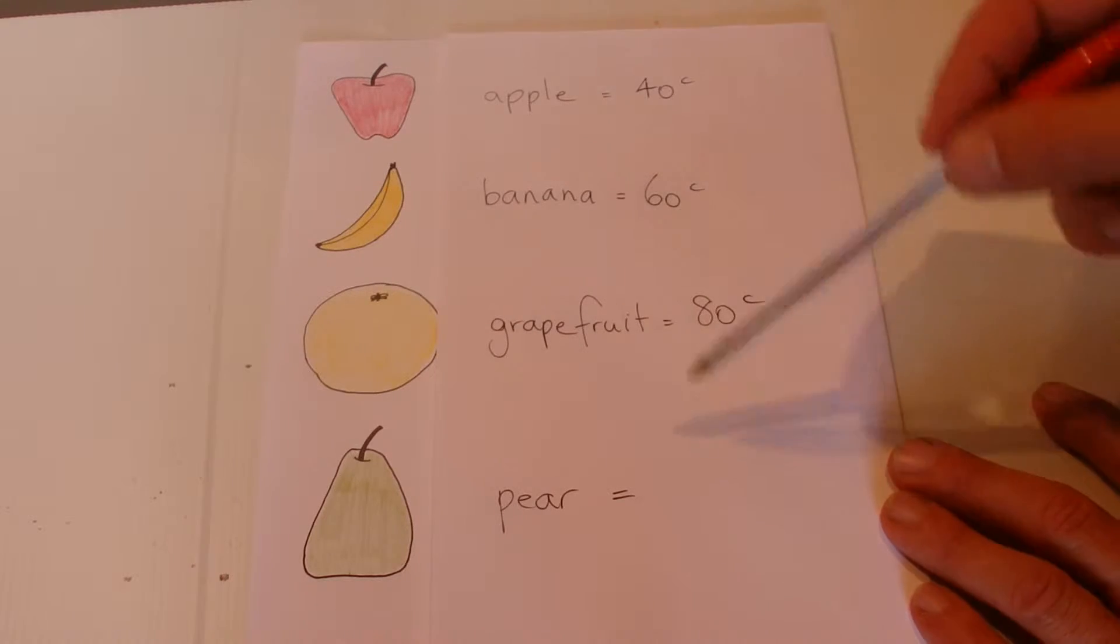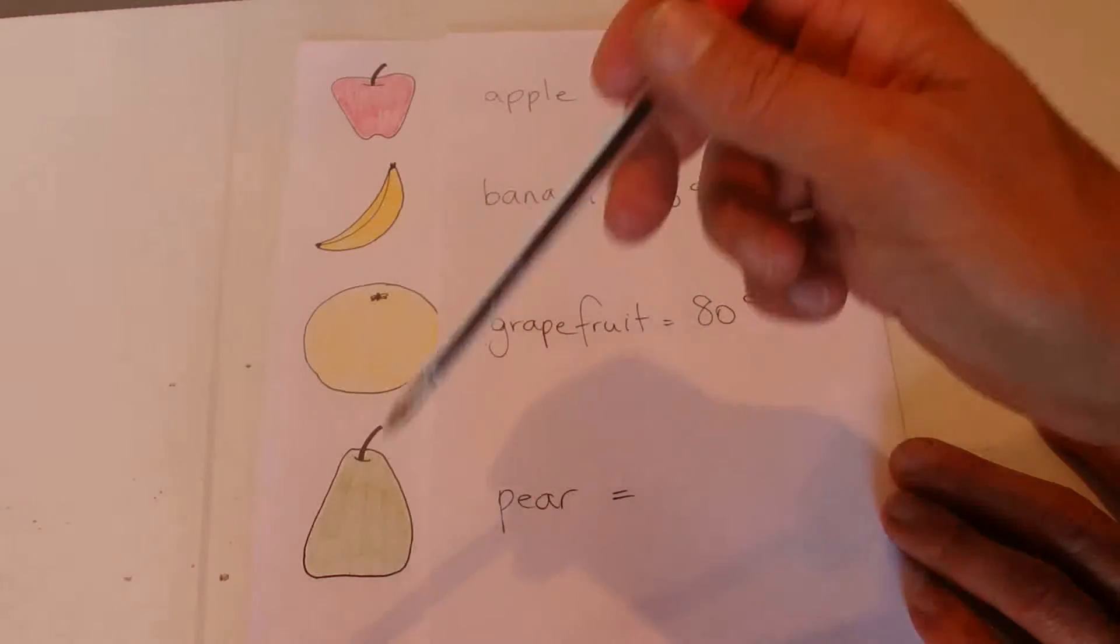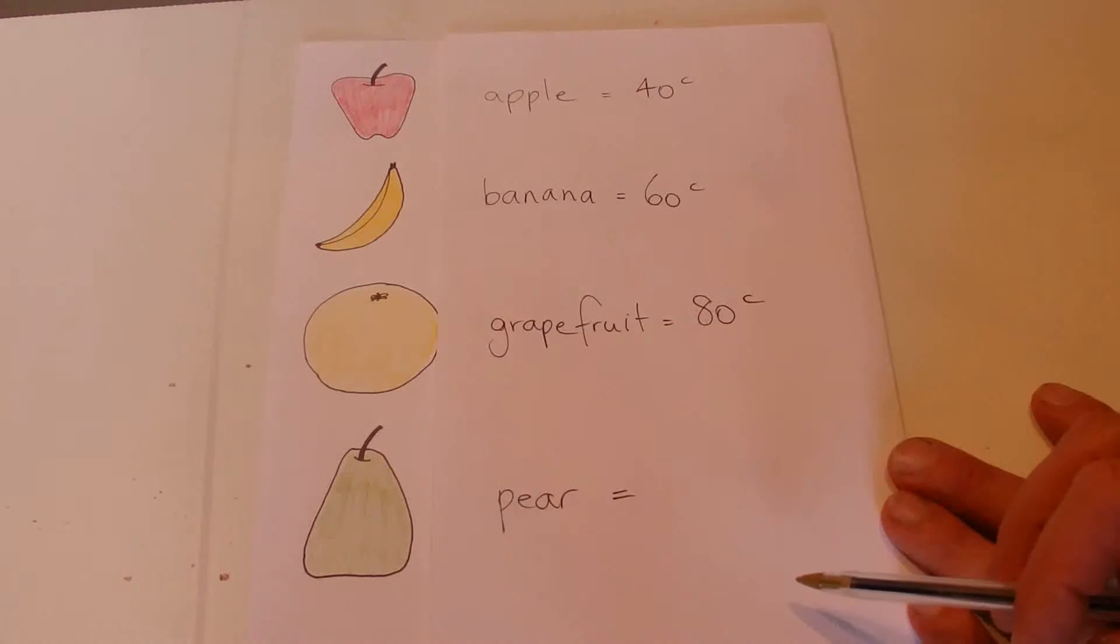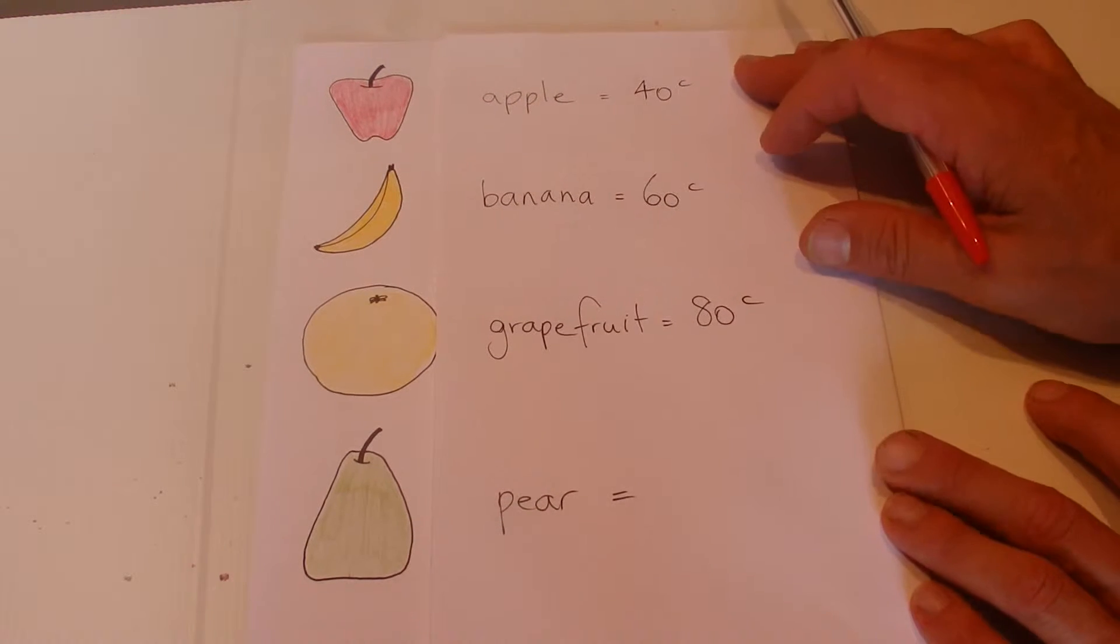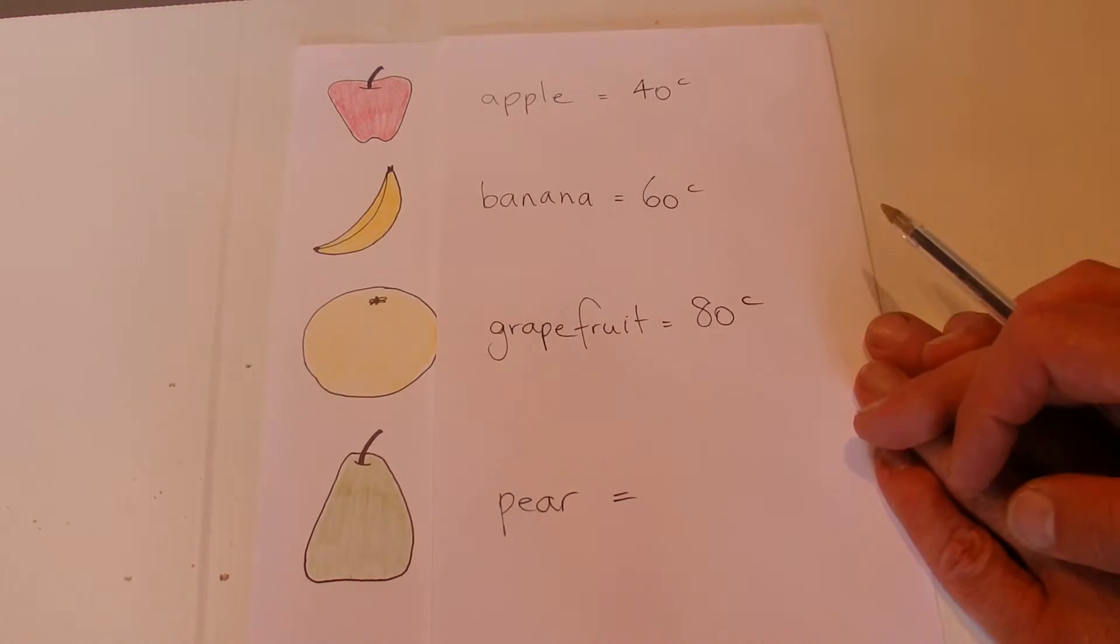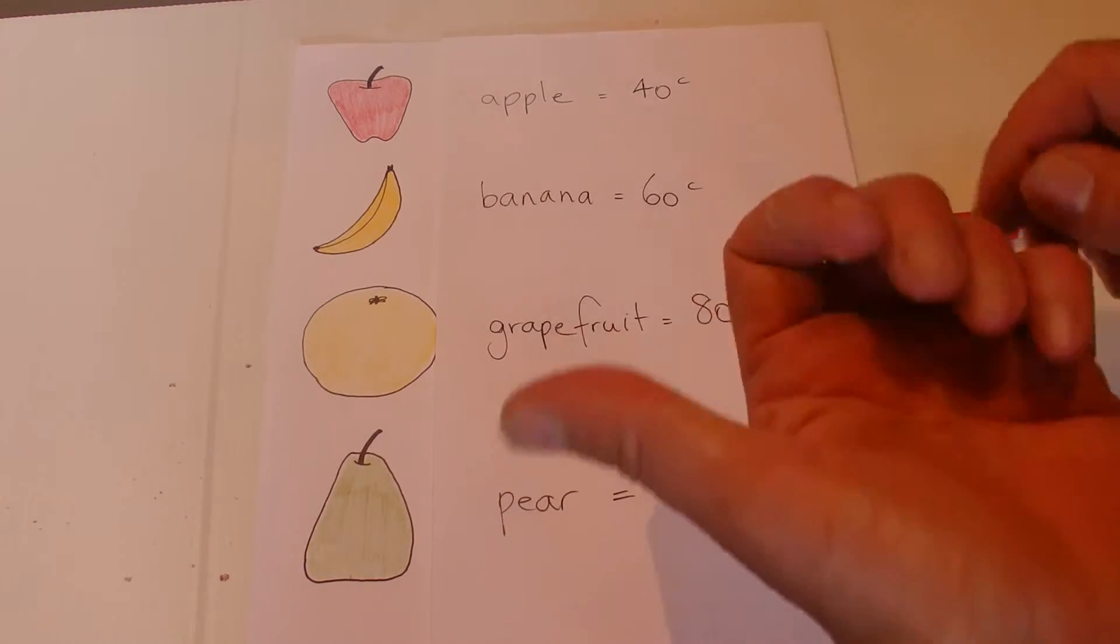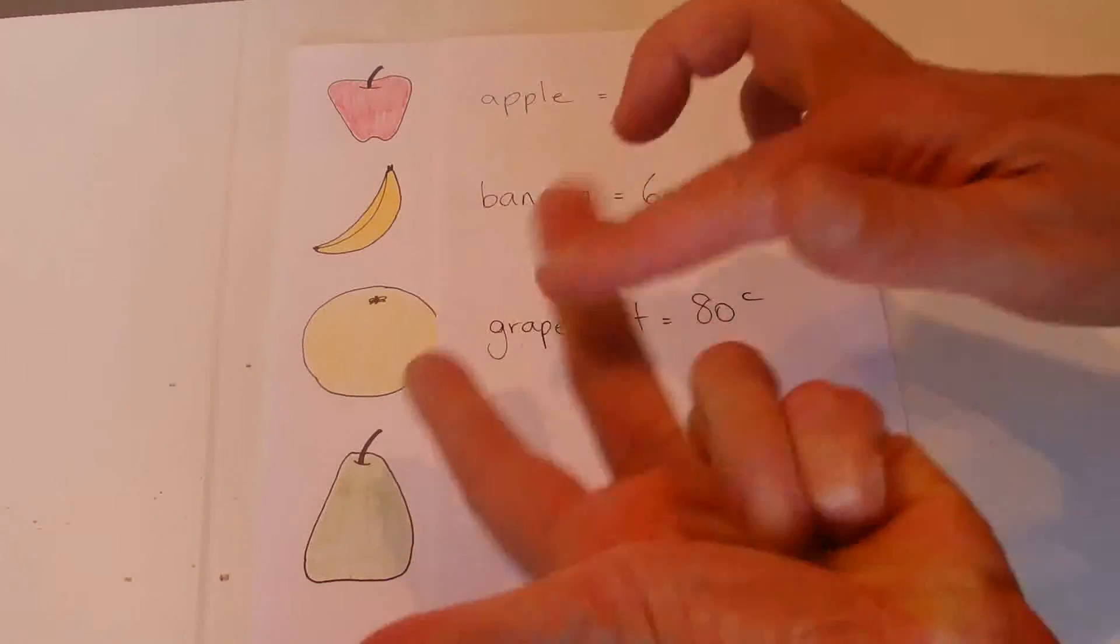Now if you want to think about the answer, press the pause button down in the bottom corner. Otherwise I'm going to go straight into the answer. The answer is it's based on the number of vowels in each of the words. The vowels are a, e, i, o, and u, and it's 20 cents for every vowel.